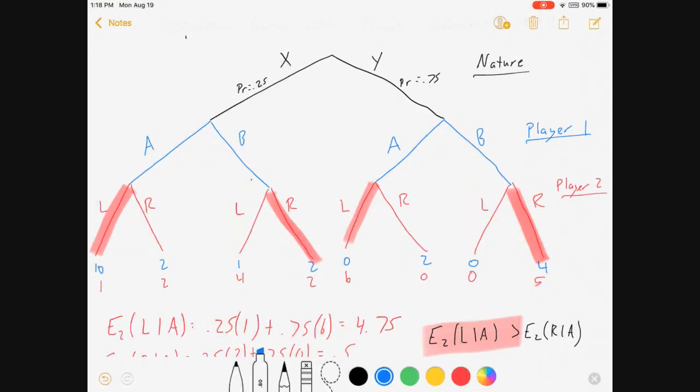If nature plays X, player one is better off playing A than B. Because A leads them here, whereas B leads them there. So if nature plays X, player one plays A. If nature plays Y, player one chooses B. Because four is greater than zero. No expectations, because player one knows exactly what's happening.